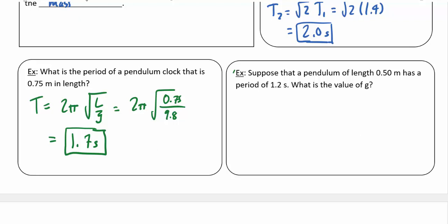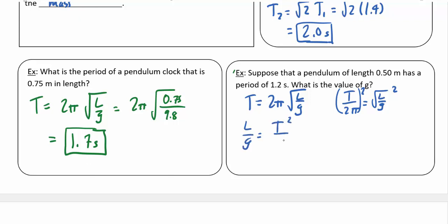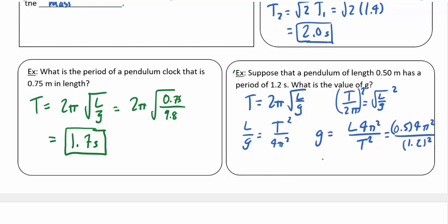Suppose a pendulum of length 0.5 meters has a period of 1.2 seconds. What is g? Starting with T equals 2π times the square root of L over g, solving for g: divide both sides by 2π, then square both sides to get L over g equals T squared over 4π squared. Solving for g: g equals L times 4π squared divided by T squared, which is 0.5 times 4π squared divided by 1.2 squared, giving approximately 13.7 meters per second squared — so this pendulum is not on Earth.